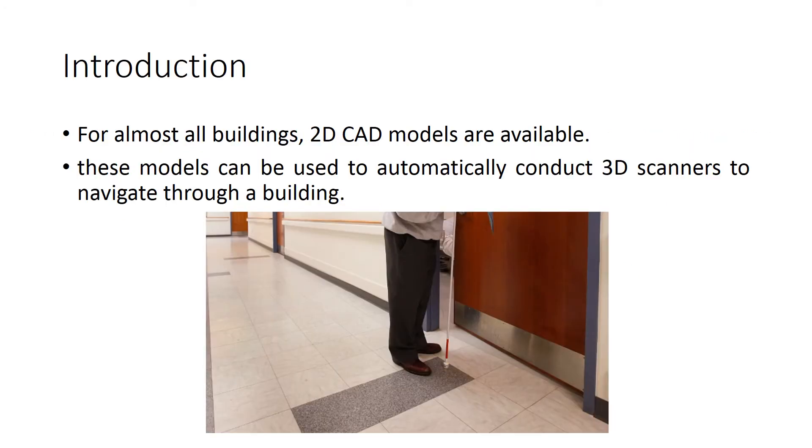For almost all buildings all over the board, 2D CAD models are available. These models can be used to automatically conduct 3D scanners to navigate through a building. This work has a wide range of applications like helping blind people to navigate through buildings without any problems.